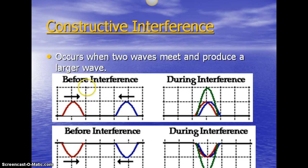So here's our example of constructive. It occurs when two waves meet and produce a larger wave. The key is that they are crests, as you can see here in this first one. They meet together and when the crests meet, they make a larger wave. And then here we have two troughs that meet and they make a deeper wave or larger wave.